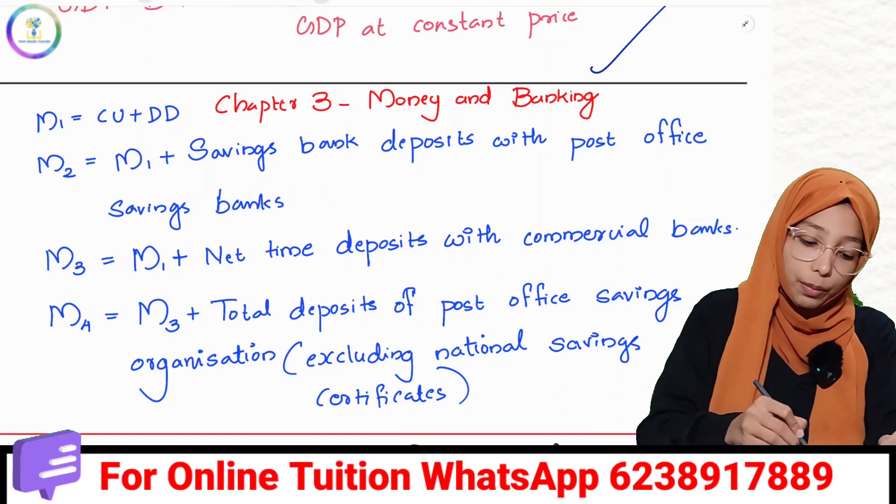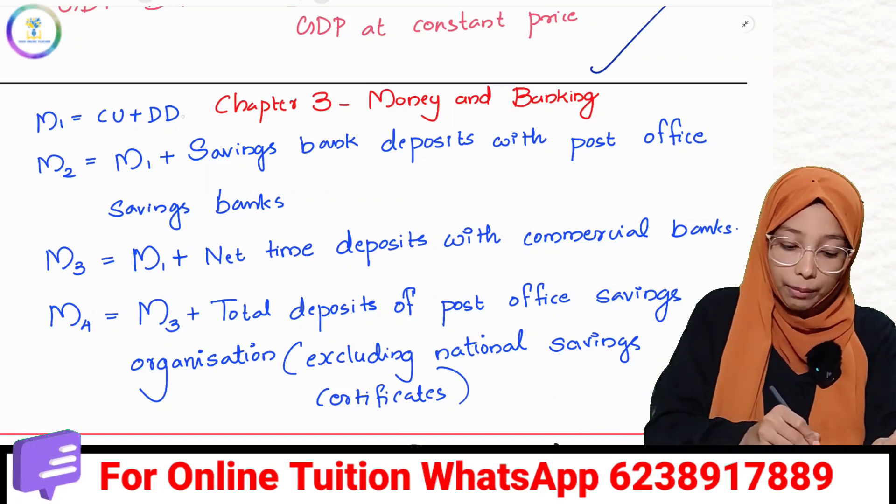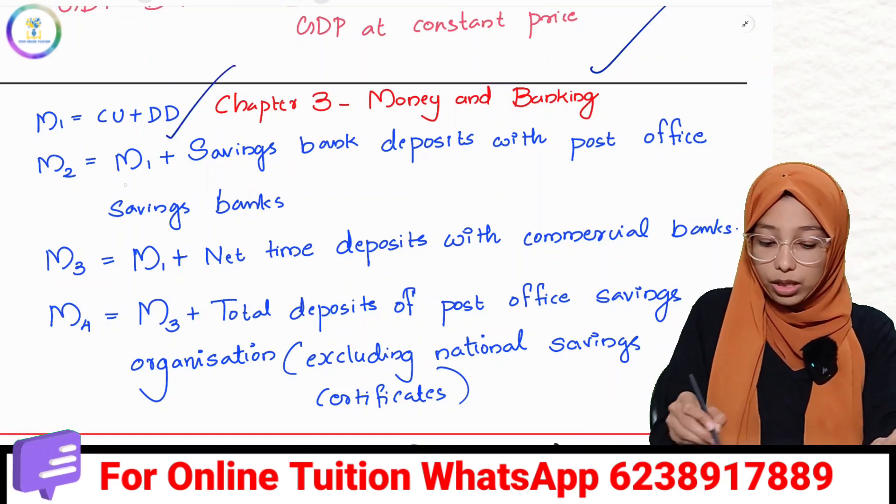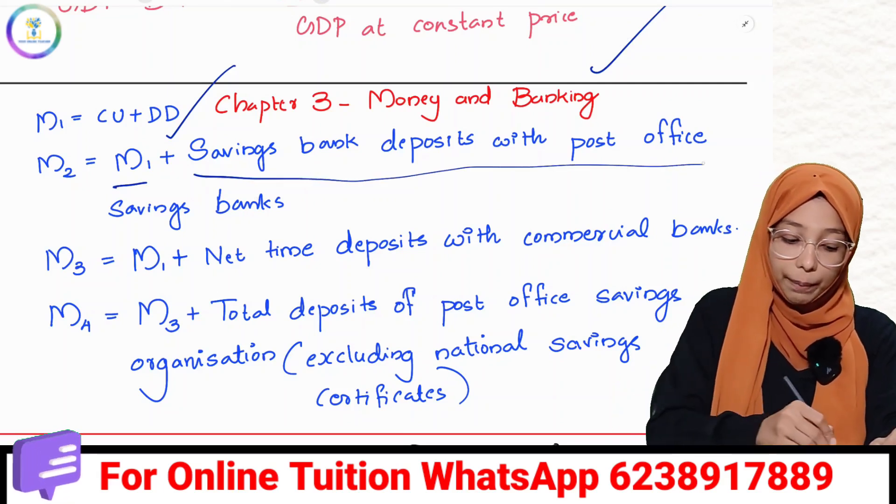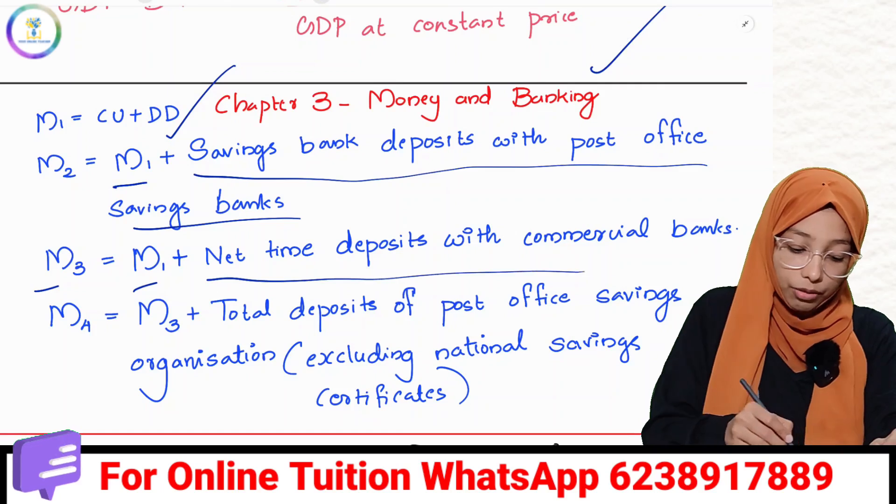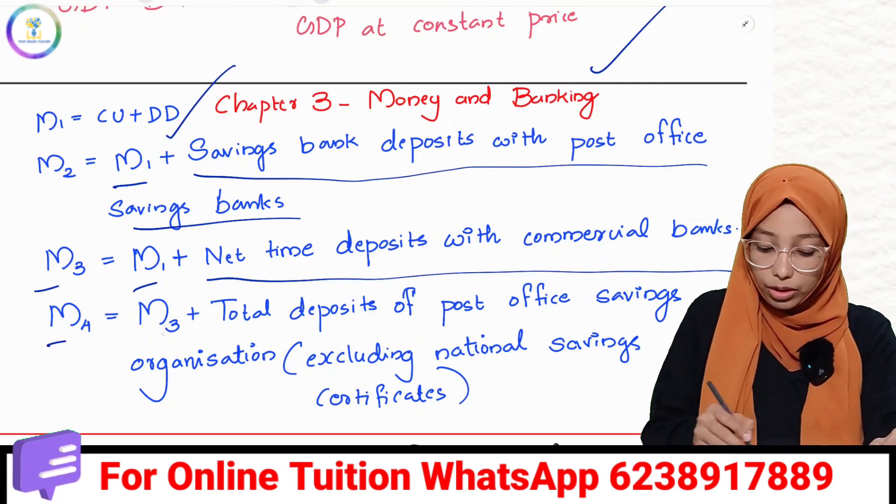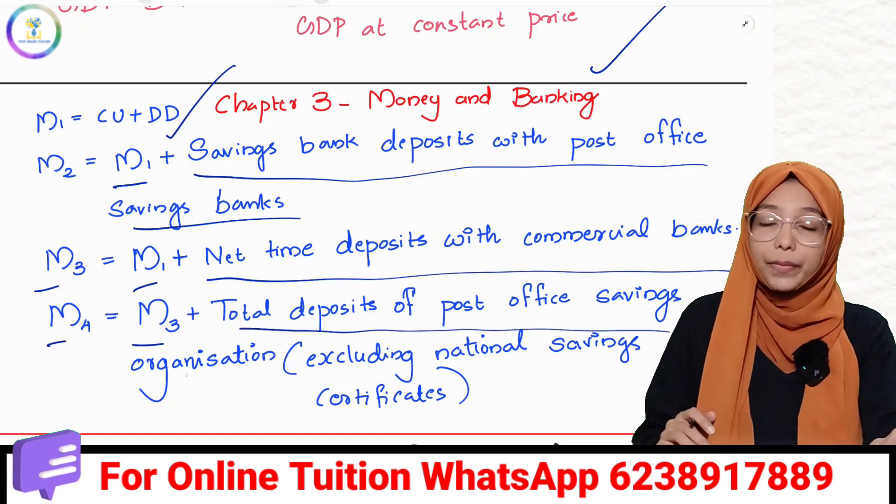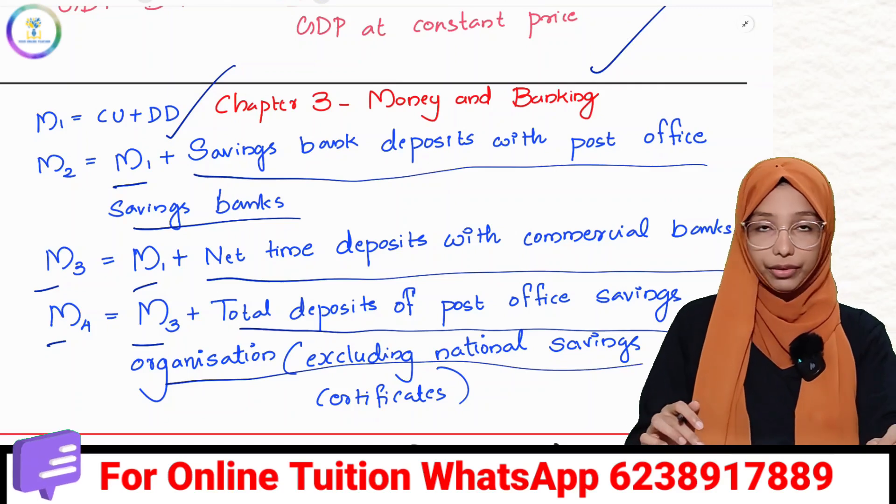M1 is Cu plus D. M2 is M1 plus Savings Bank Deposit with Post Office. M3 is M1 plus Net Time Deposit with Commercial Banks. M4 is M3 plus Total Deposit of Post Office Savings Organization, excluding National Savings Certificate.